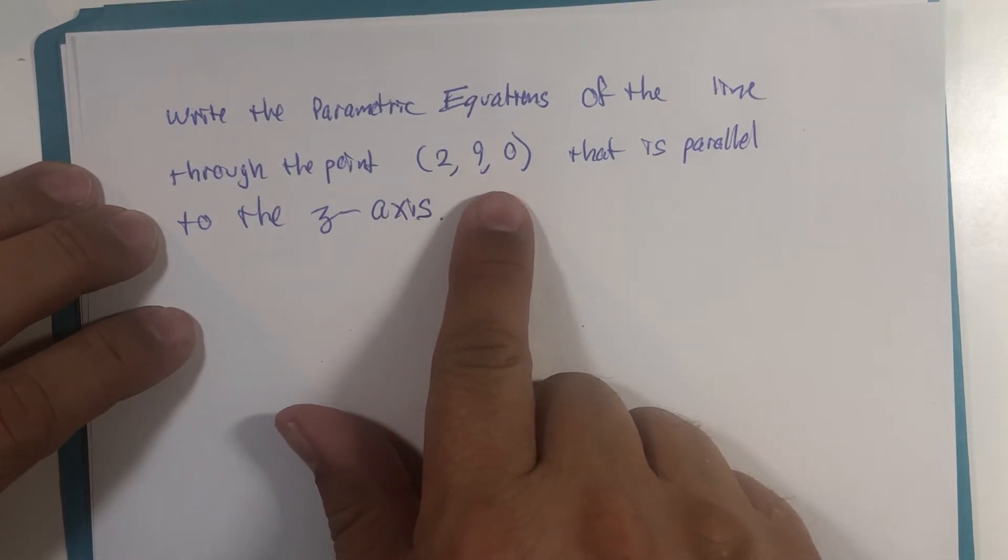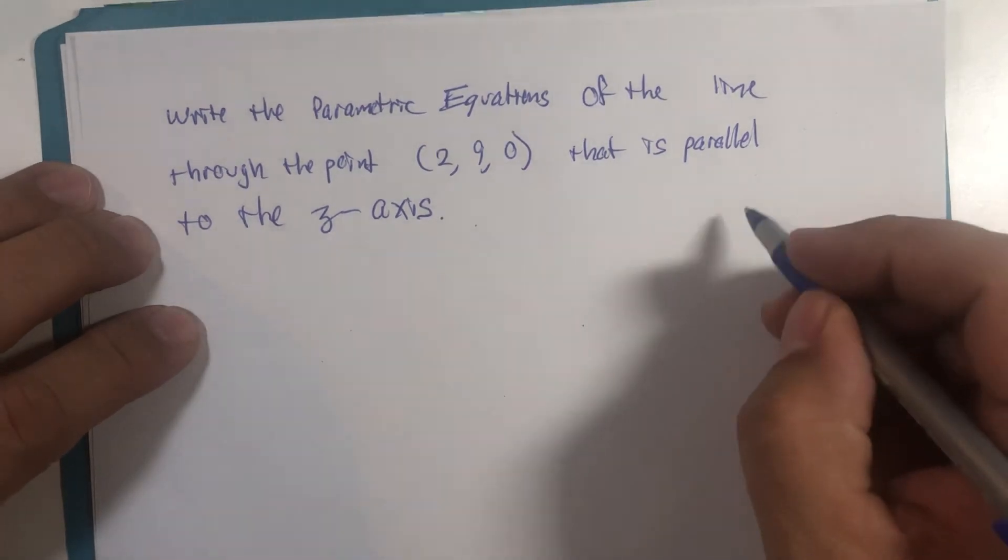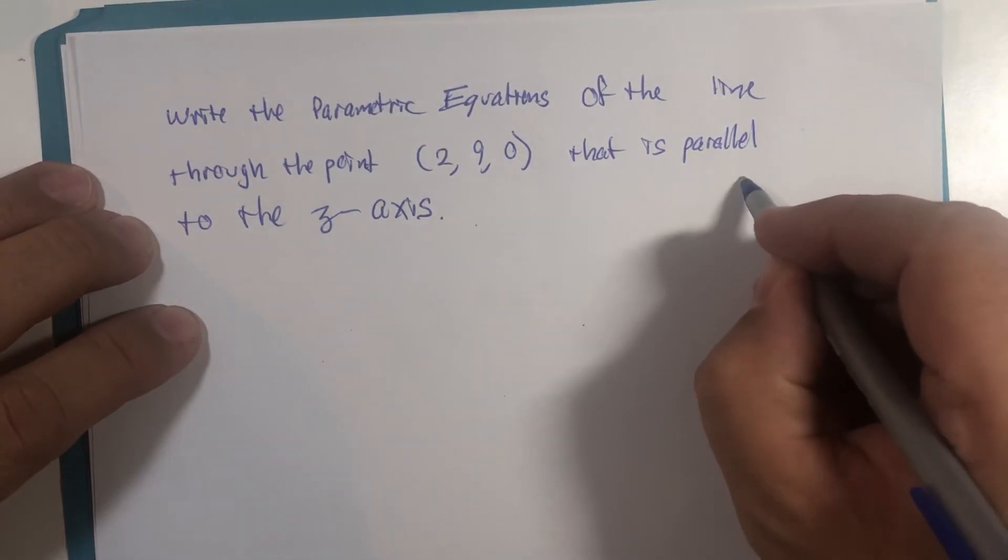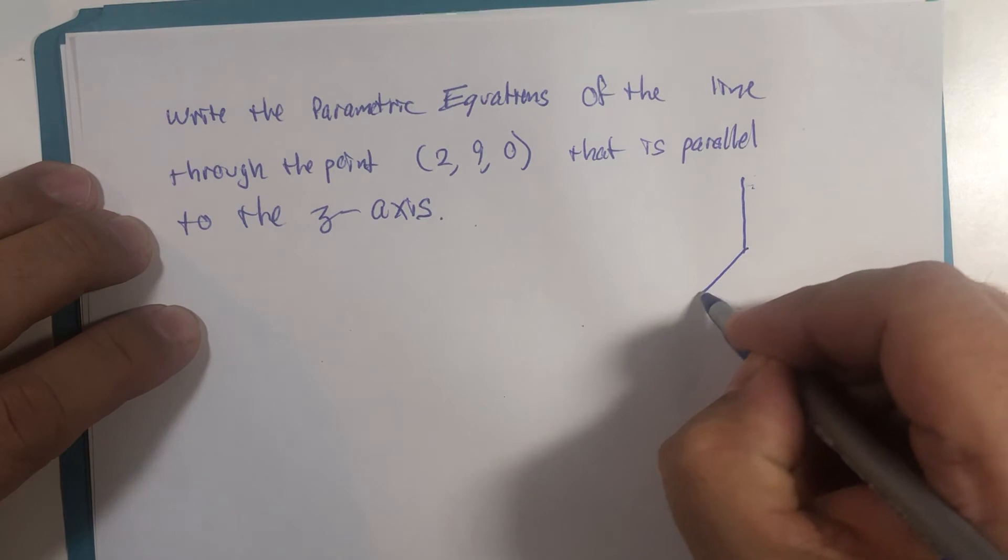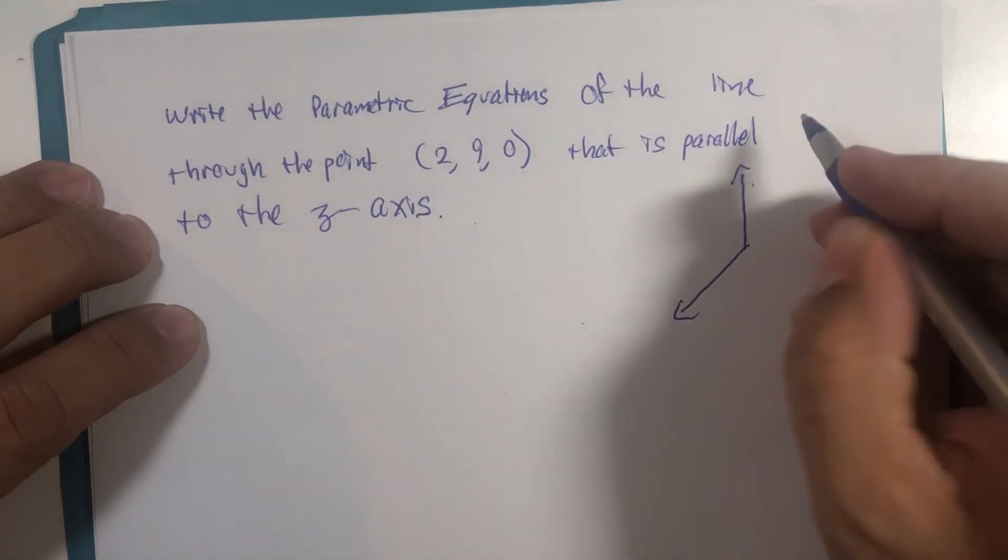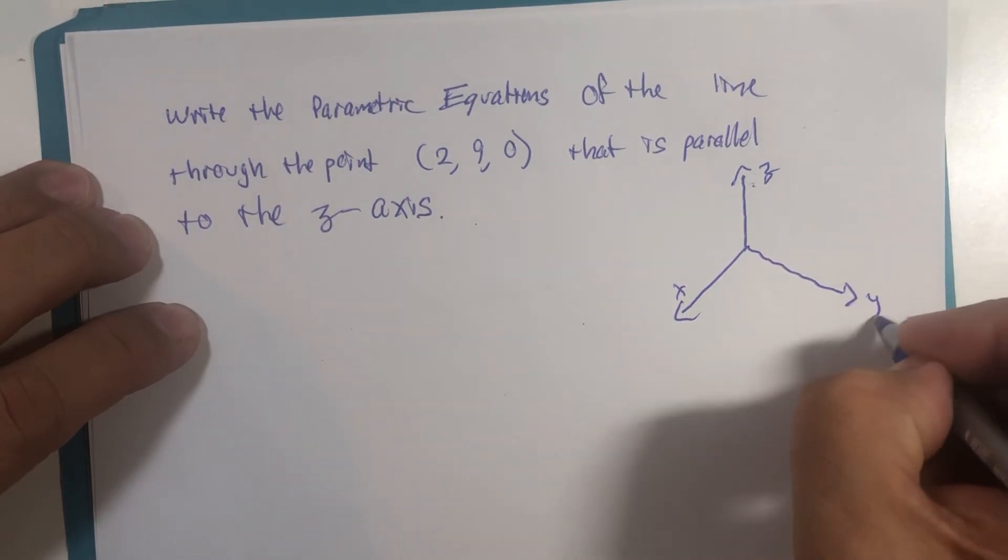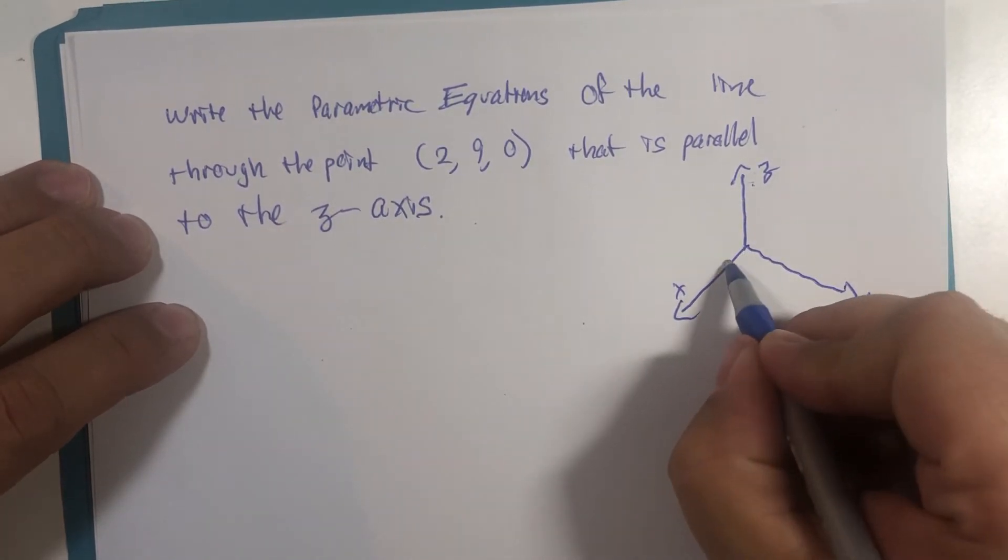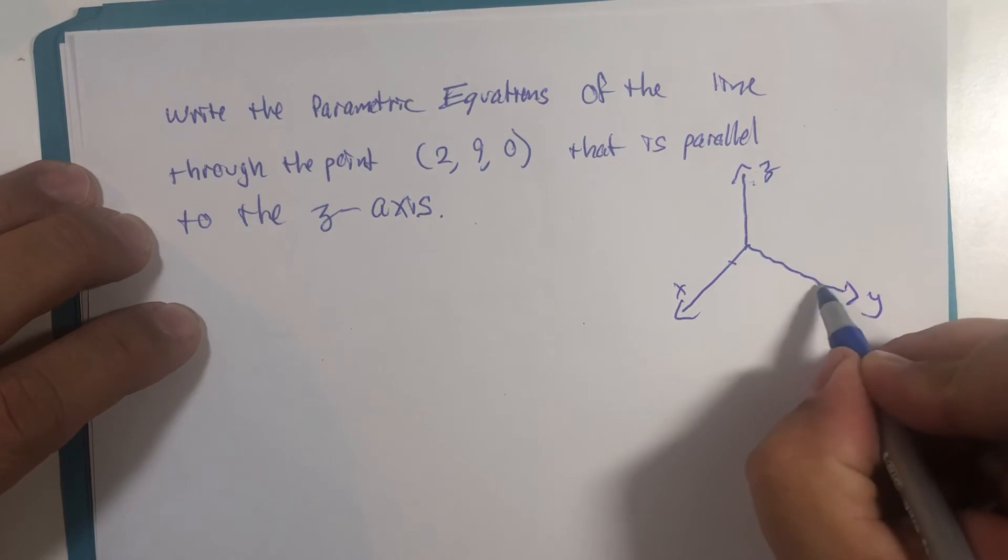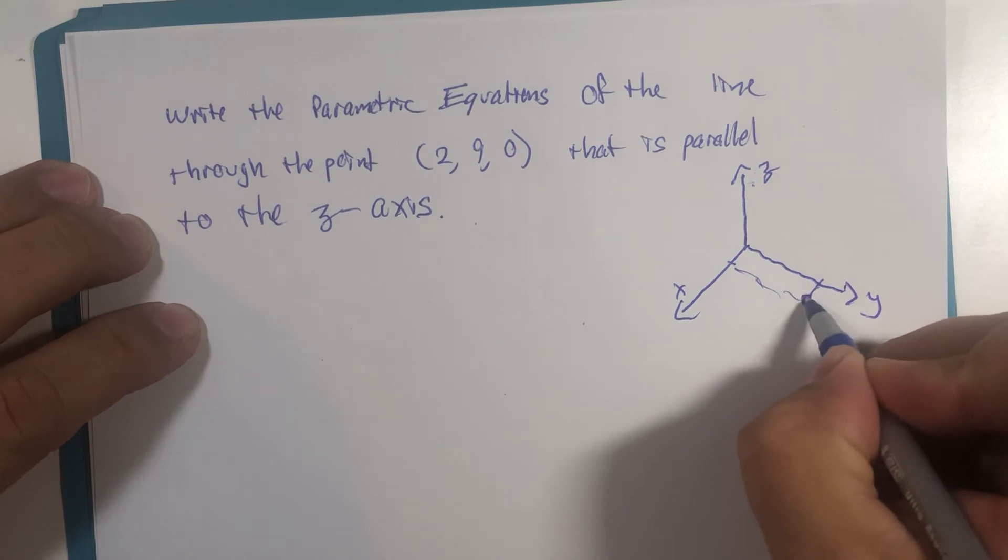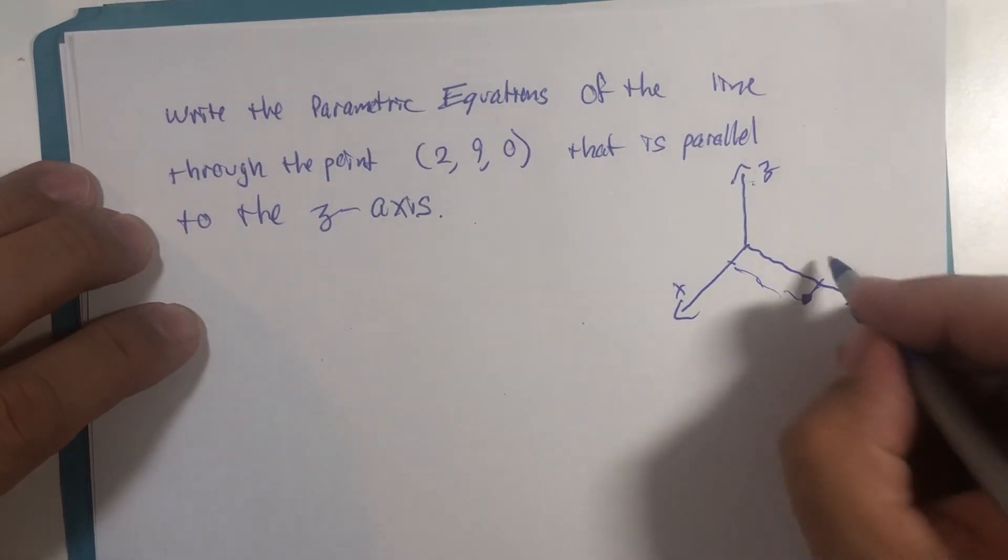Let's write the parametric equations of the line that go through this point (2, 9, 0) that is parallel to the z-axis. I actually think I could sort of sketch this point for your imagination: z, x, and y. So 2 in the x direction, 9 in the y direction, and don't go in the z direction. So it'd be that point right there - think of it as a point on the ground.